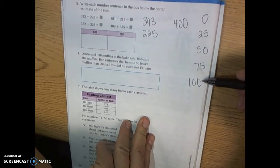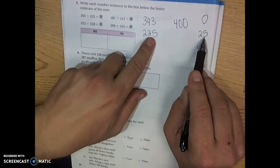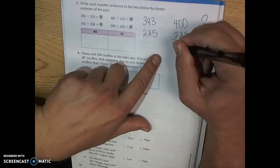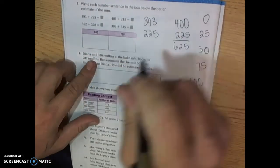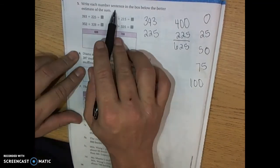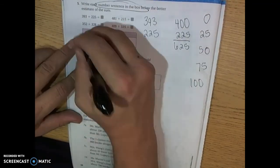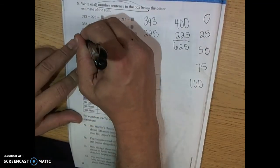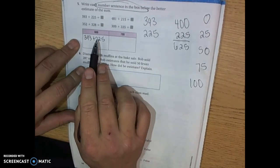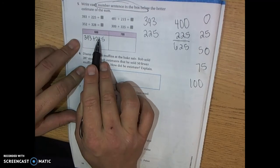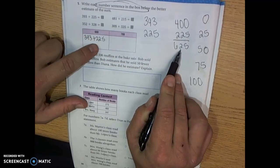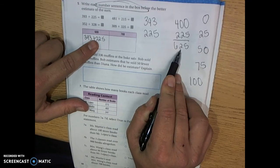225. Which one is that closest to? 25. So this one stays the same. 625. So write each number sentence in the box. So you're going to put 393 plus 225 in here because this one rounds in the 600's. That's the better estimate. 625 is closer to 600. So this one would go here.